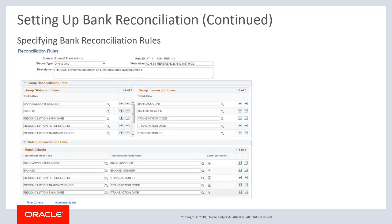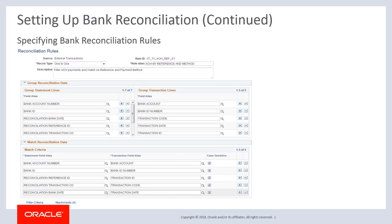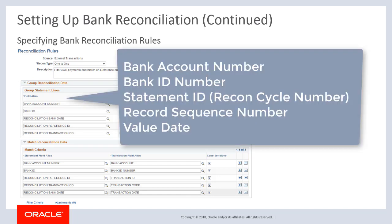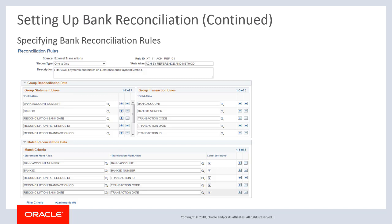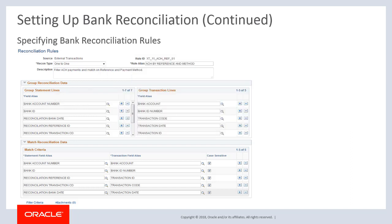When you aggregate statement lines using the group statement lines grid, do not include the amount field. For one-to-one and one-to-many rules, group using bank account number, bank ID number, statement ID, record sequence number, and value date. For many-to-one and many-to-many rules, group using bank account number, bank ID number, statement ID, and value date. You can add additional grouping fields as needed.